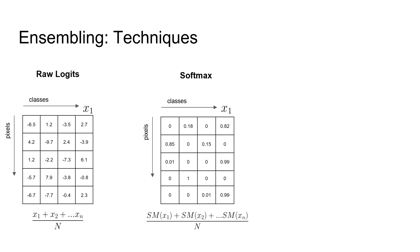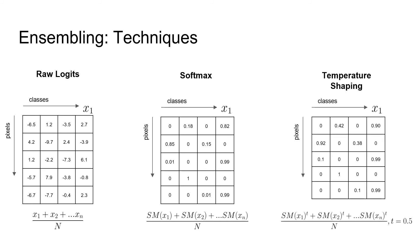Another ensembling technique is temperature shaping. It is similar to the softmax function, except the outputs are additionally taken to the power of 0.5. In a sense, such an ensembling technique enhanced the distribution of our classes by reducing variance. Interestingly, in our practice, the best performing ensembling technique was average across raw logits. This could be explained by the fact that we used only EfficientNet family of models.